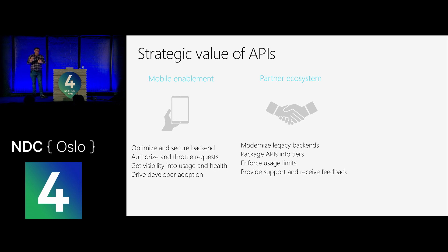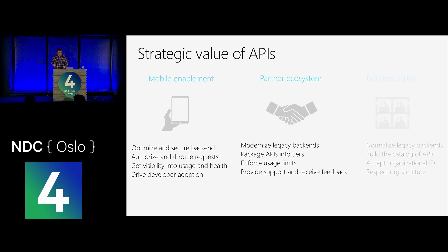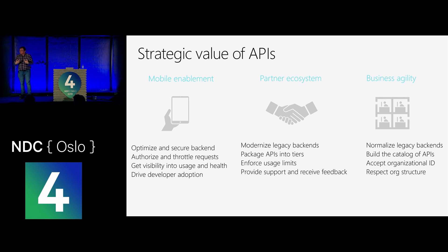APIs also allow us to drive developer adoption — our clients can start building their own applications on top of our APIs — and to bring up a partner ecosystem where partners can use our data and processes to build their own applications. This exposes legacy backends in a new and improved way. We can start packaging our APIs and actually start selling our data or processes to make money. We can enforce use limits, provide support, get feedback from clients, and gain business agility — even using things like PowerApps.